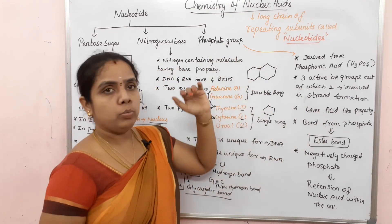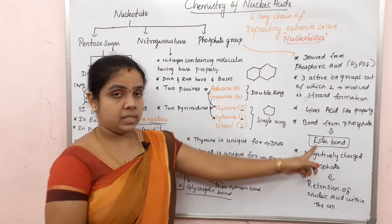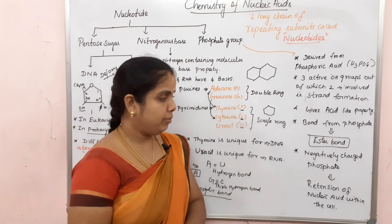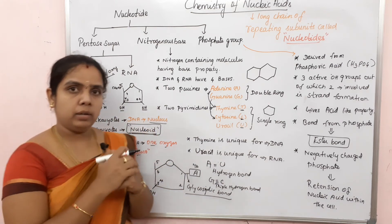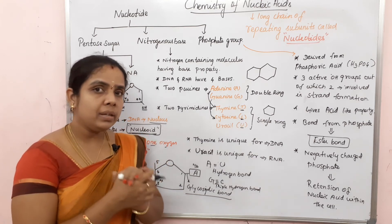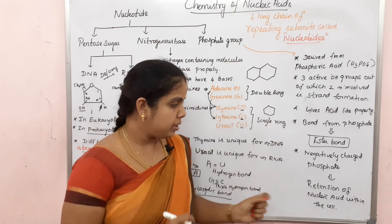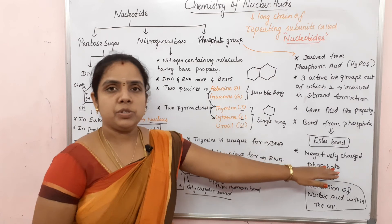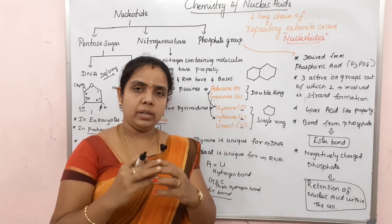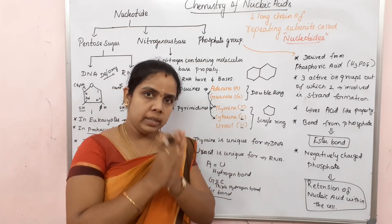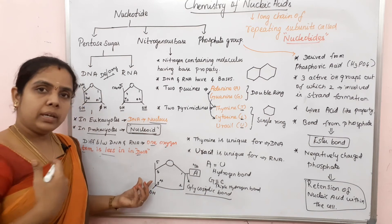The phosphate group is phosphoric acid, so it gives an acid-like property. The bond formed with the phosphate group is called an ester bond. The phosphate group is negatively charged. This negatively charged phosphate helps the retention of nucleic acid within the cell - it keeps the nucleic acid inside the cell.